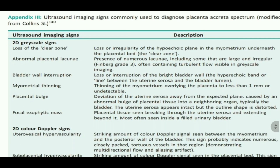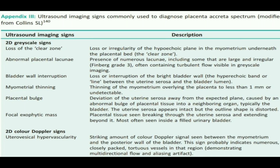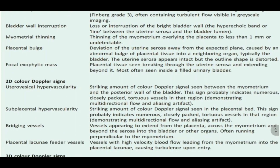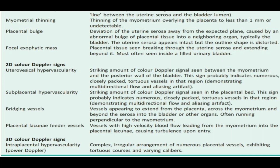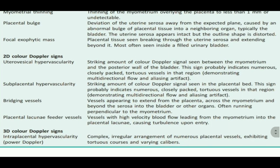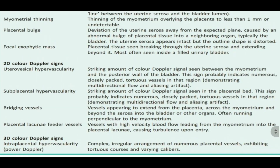In summary, the 2D grayscale signs are: loss of the clear zone or hypoechoic plane in the myometrium underneath the placental bed; abnormal placental lacunae — numerous, large, and irregular, often containing turbulent flow visible on grayscale; bladder wall interruption; myometrial thinning to less than 1 mm or undetectable; placental bulge; and focal exophytic mass. The 2D Doppler signs are: uterovesical hypervascularity, subplacental hypervascularity, bridging vessels, and placental lacunae feeder vessels. The 3D Doppler sign is intraplacental hypervascularity. That covers the two important appendixes.